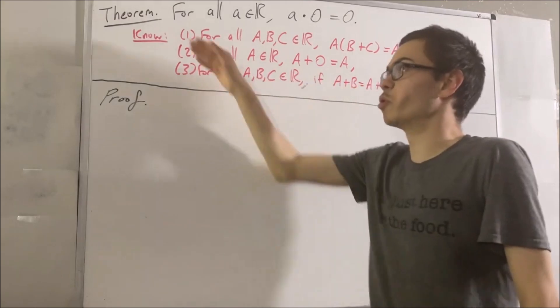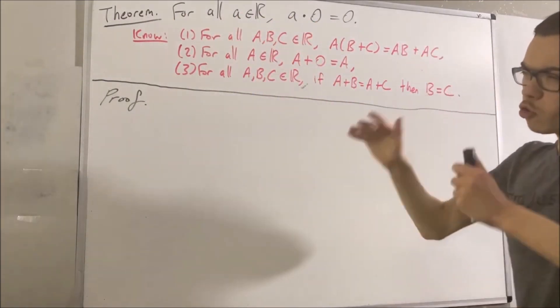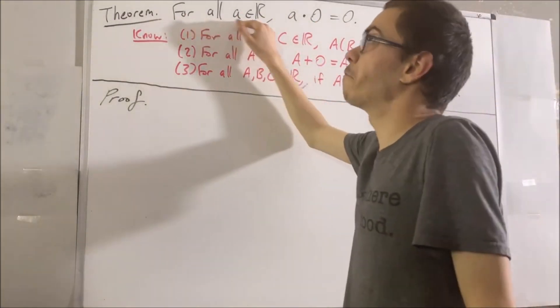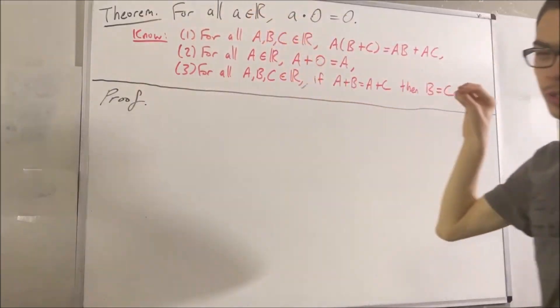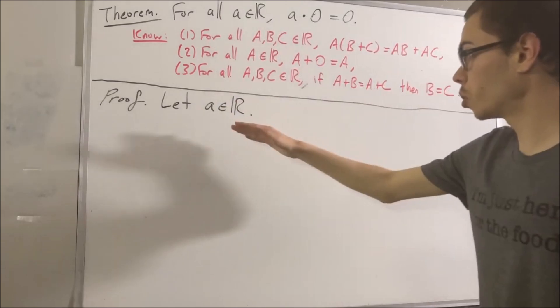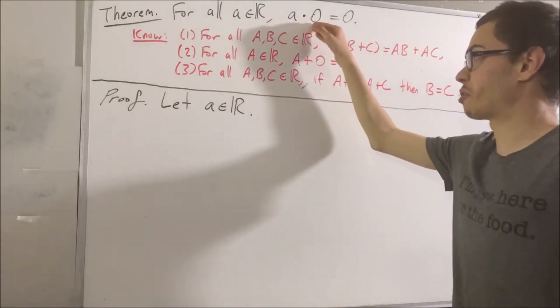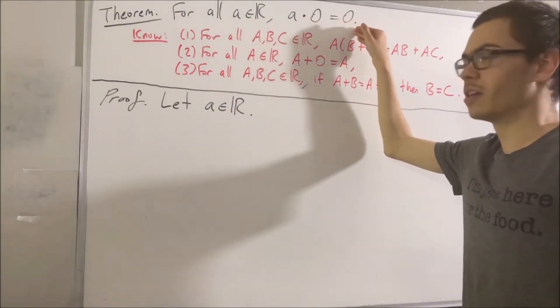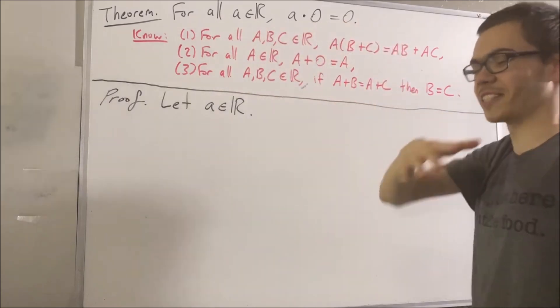So now, let's get into the proof of this theorem. We're trying to prove a statement about every real number, so give me an arbitrary real number. I'll call it a. Our goal is to deduce that a times zero is equal to zero. And so to start, check this out.